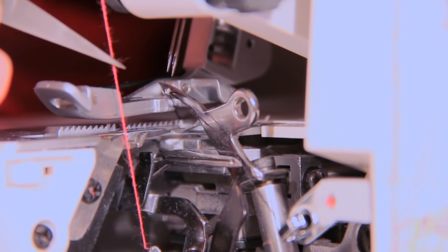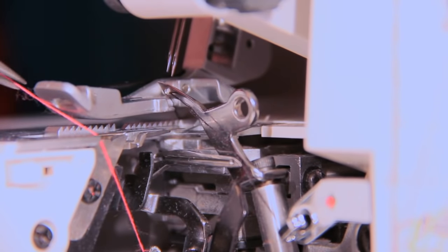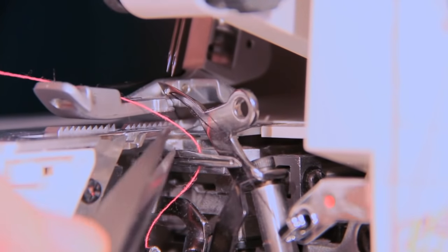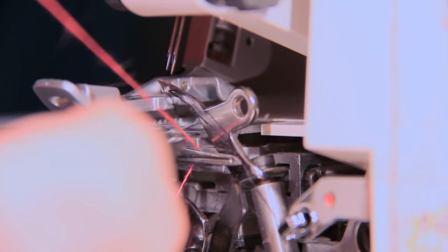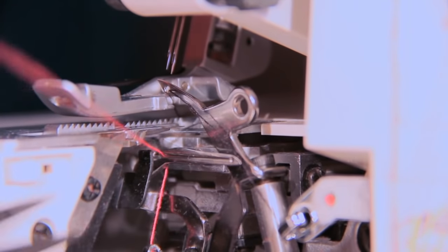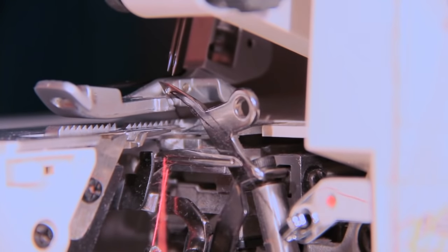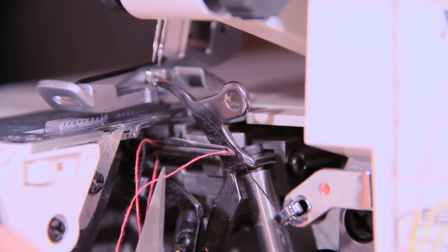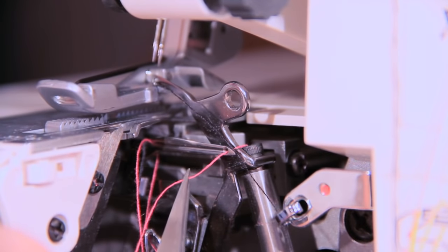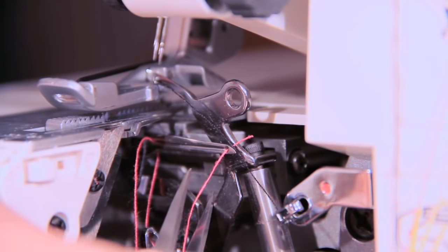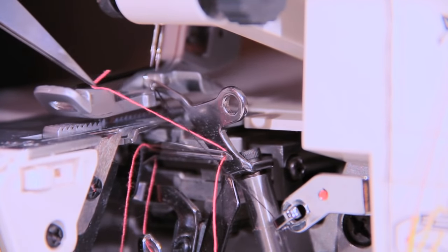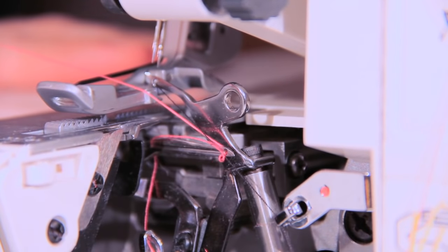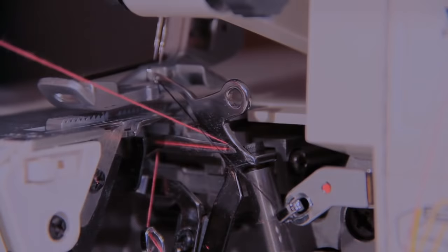Now here we go, we're going to take our lower looper thread. This is the hardest part of the whole threading process. Slip it behind the lower looper needle and try as best as you can to get in that tiny little cutout in the back. You'll kind of see it here in a minute. Use your tweezers, pop it in that little cutout. There we go. Go ahead and take your tweezers to slide the thread into the eye of the lower looper. And pull that thread all the way out, trying not to get it tangled with the upper looper thread. Congratulations, that was the hardest part.